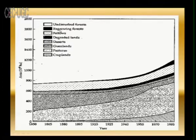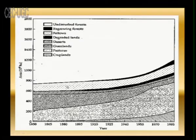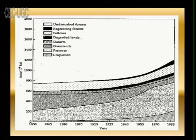A diagram illustrates forest conversion showing undisturbed forest, regrowing forest fallow, degraded land, desert, grassland, pastures and croplands. Wherever the black color appears, the land has been degraded. Some portions have been left fallow and green pastures and croplands are declining, while some portions have become desert. This is a serious concern — the conversion of forest into desert or fallow land.